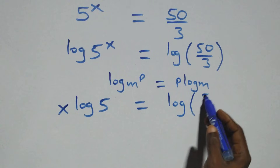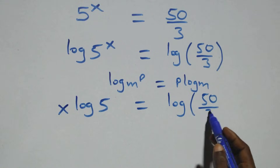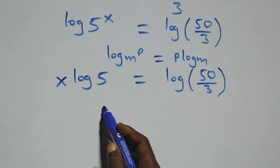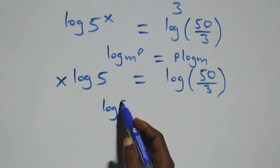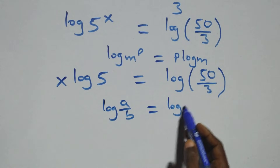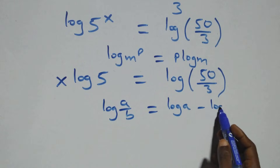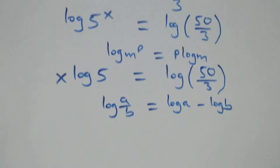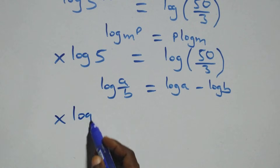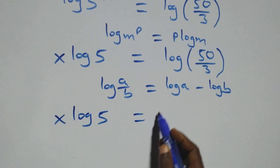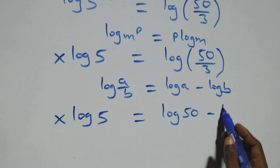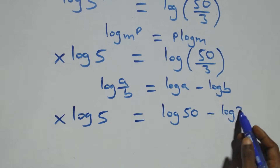This also follows that log of a over b can be expressed as log a minus log b. So this becomes x times log 5 equals log 50 minus log 3.